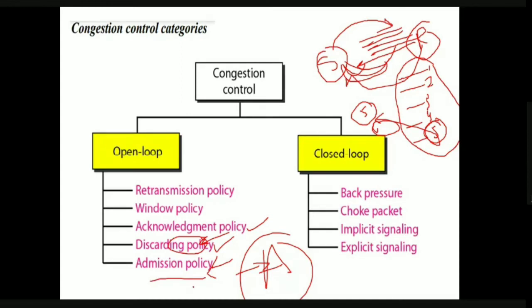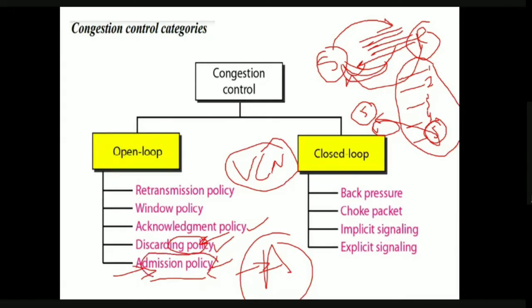The fifth open loop policy is admission policy, which is a quality of service mechanism that prevents congestion in virtual circuit networks. Switches check resource requirements before allowing data transmission. If there is congestion, a router or switch can deny establishing a new virtual circuit connection, thereby preventing further congestion.